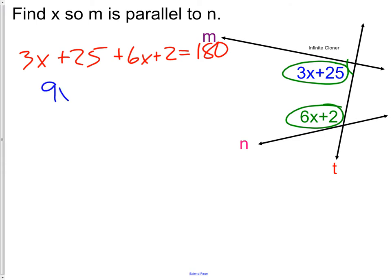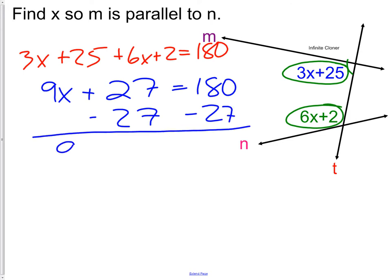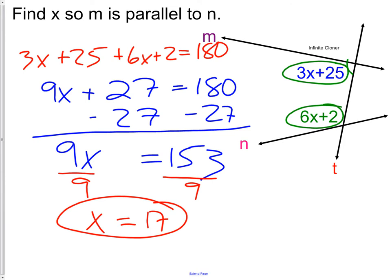Let's try and finish the algebra here. 3x and 6x makes 9x plus 27 equals 180. We have 9x equals 153. And if we divide by 9 we will see that x equals 17. What we can now say is that when x equals 17 line m is parallel to line n.